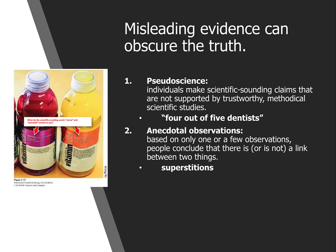Misleading evidence can obscure the truth, and this is rampant these days. Before my time they used to sell snake oils off the back of wagons and make all sorts of claims. We're kind of in the same boat today. What is different now is you have the tools to discern and debunk these things — you can Google it. But you've got to be careful of the source, which is why a refereed journal is better. You can make good decisions. Pseudoscience involves individuals making scientific-sounding claims not supported by trustworthy or methodical science.